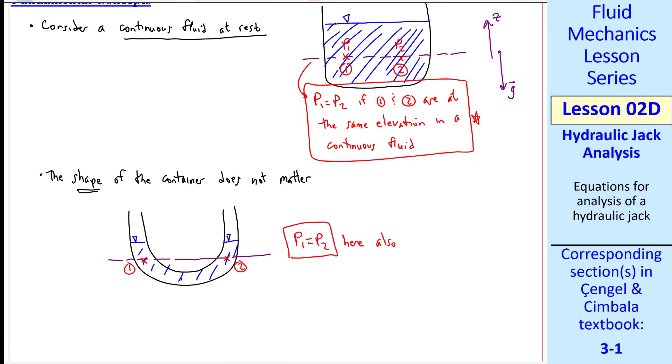We meet the two criteria. 1 and 2 are at the same elevation, as we see here, and it's a continuous fluid, from 1 to 2. What that means is you can draw some kind of a curve from 1 to 2, through the same fluid.